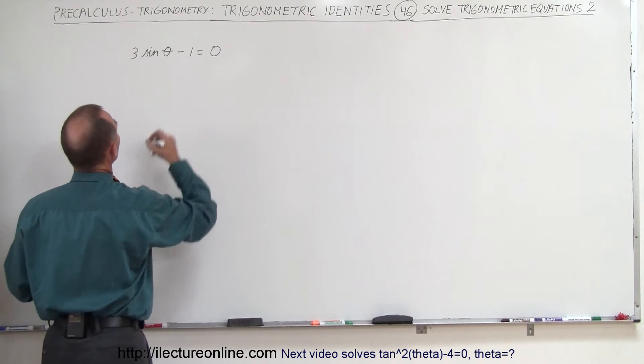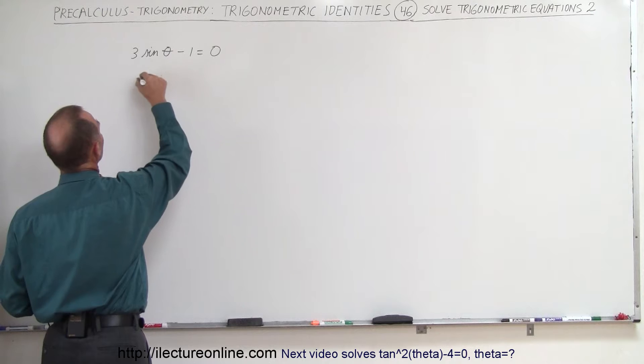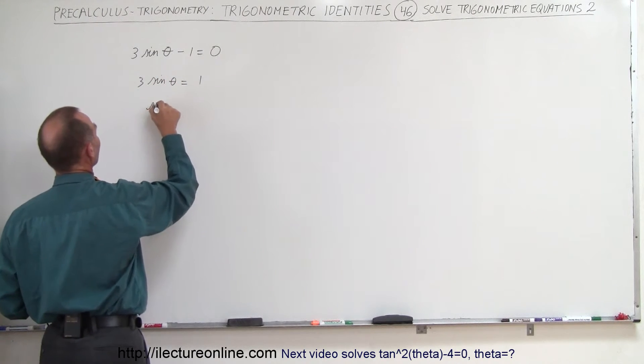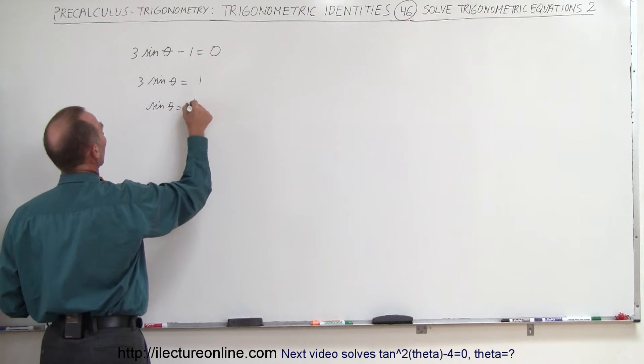First we'll move the one across the other side so we have 3 times the sine of theta is equal to positive 1, then divide both sides by 3 so we get the sine of theta is equal to 1 third.